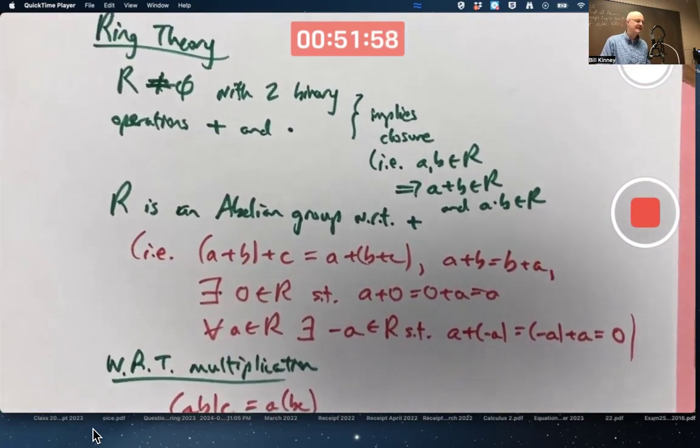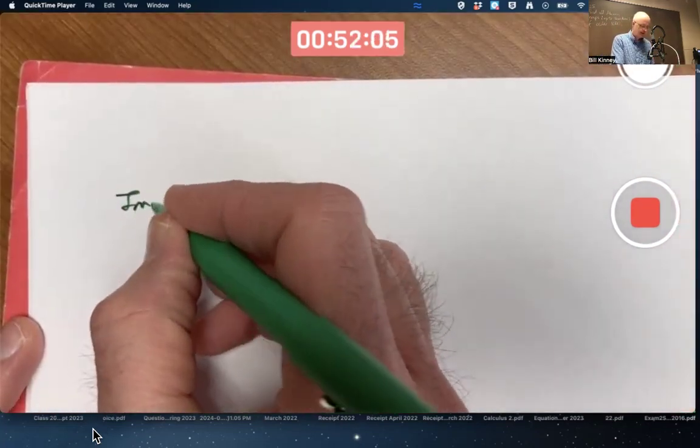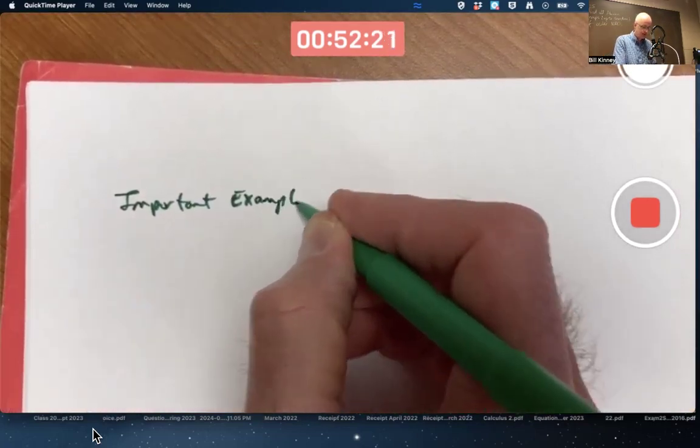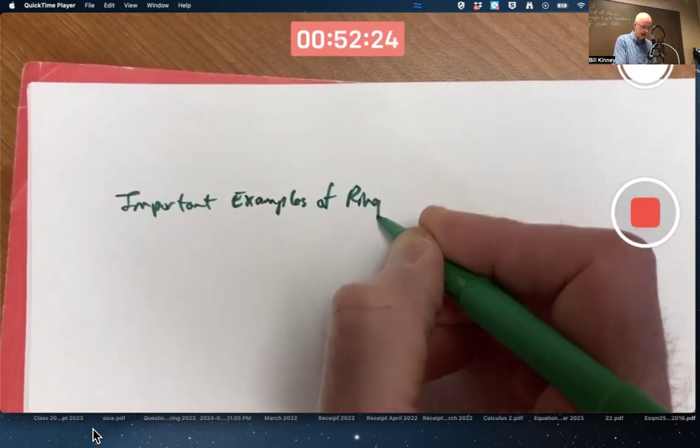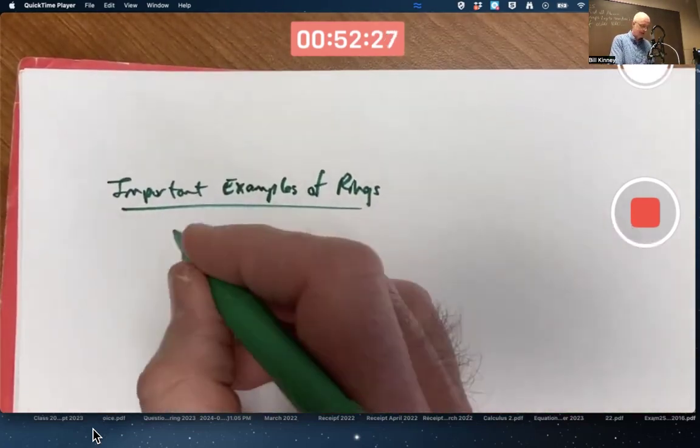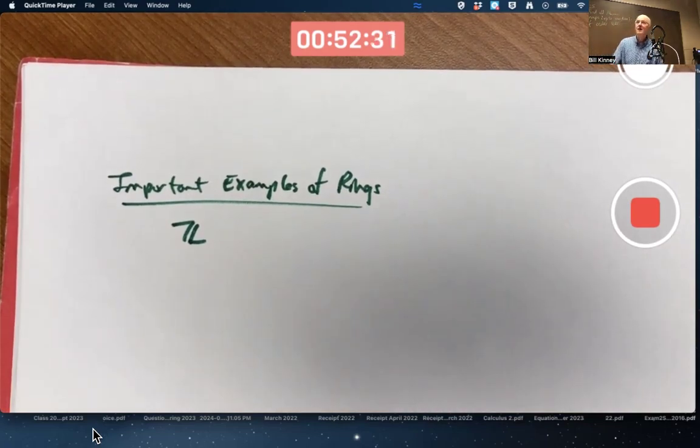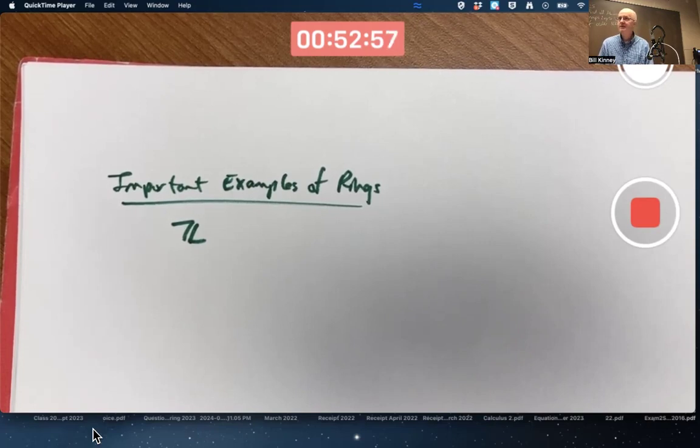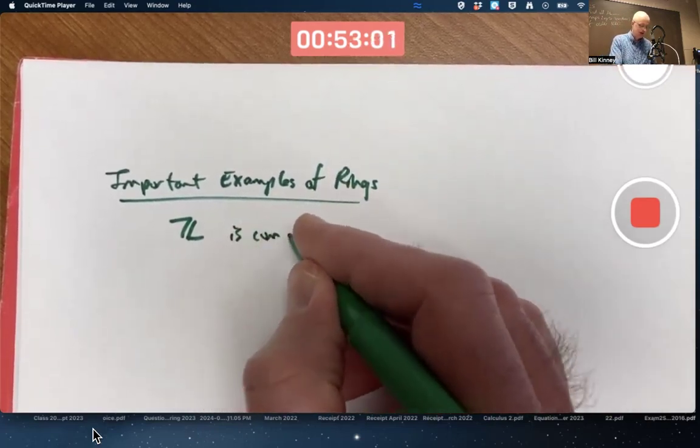Let's end by just mentioning some examples of rings. Important examples of rings. Z is a ring, the integers, under ordinary addition and ordinary multiplication of integers. Think about it. We already know Z is an abelian group under ordinary addition. We already know that. It also, the multiplication, satisfies the associative property and the distributive property. It's a commutative ring. Multiplication is commutative. Z is a commutative ring.